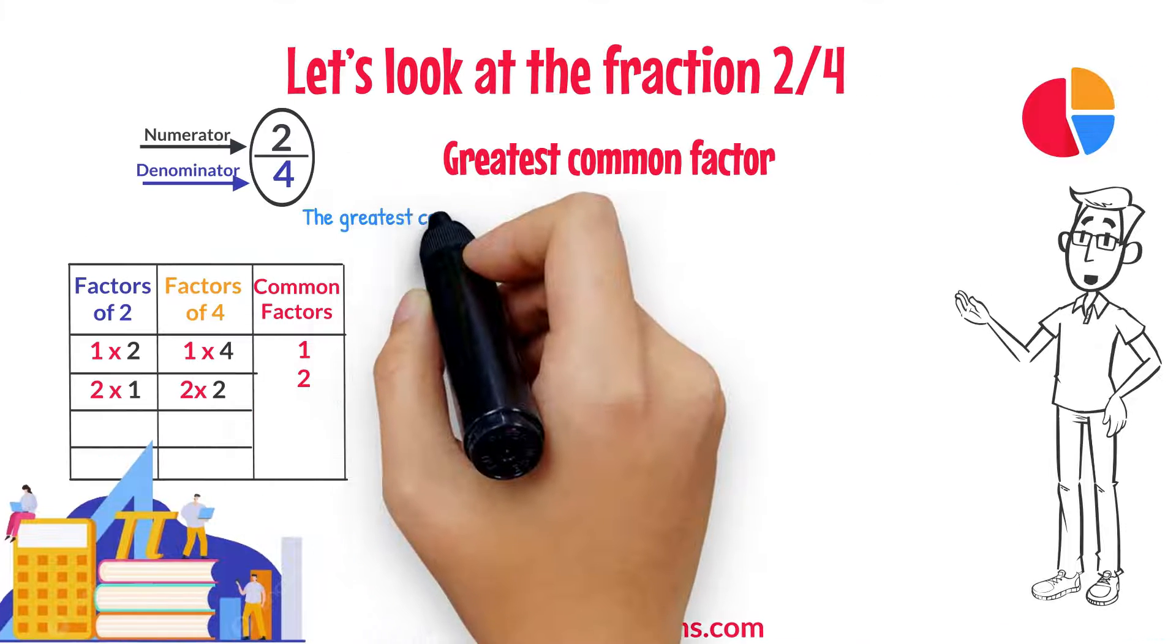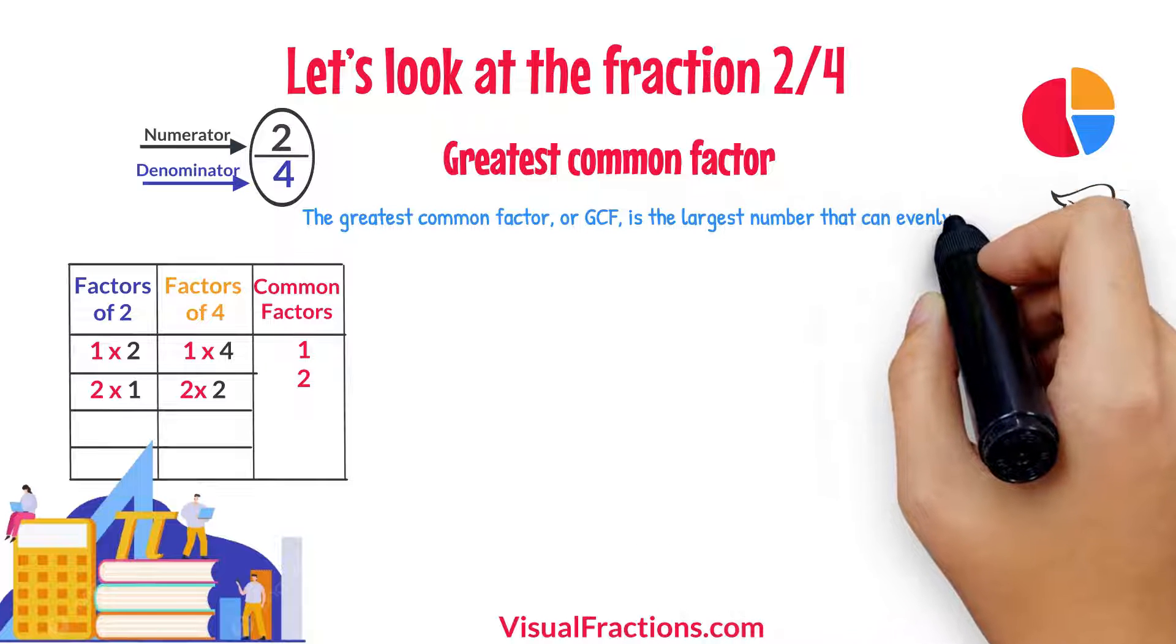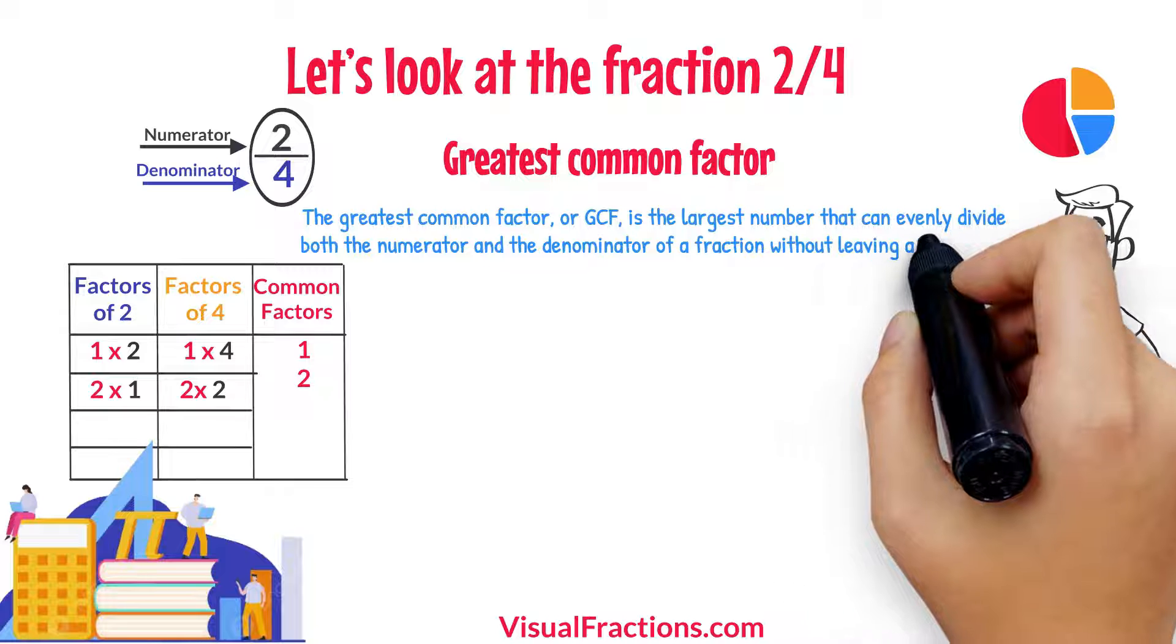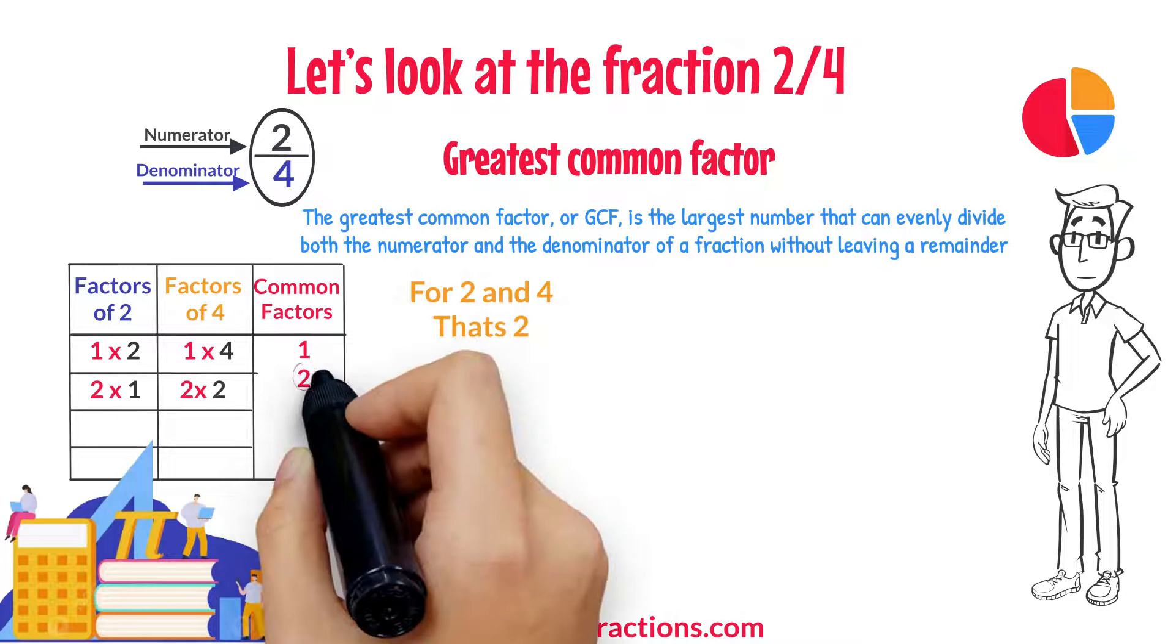The greatest common factor, or GCF, is the largest number that can evenly divide both the numerator and the denominator of a fraction without leaving a remainder. For 2 and 4, that's 2.